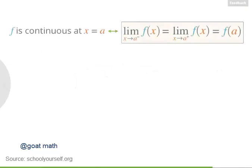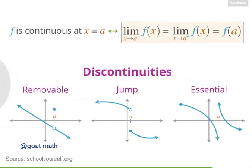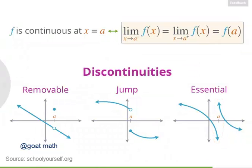So here's a quick recap. A function f is continuous at x equals a only when the left and right limits both equal f of a. Here are the three types of discontinuities: removable, where the left and right limits are equal; jump, where the left and right limits are different; and essential, where at least one of the left and right limits goes off to infinity or doesn't exist.